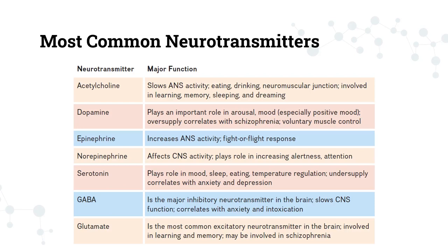Next is dopamine, which plays a very important role in arousal, mood — specifically positive mood — and voluntary muscle control. There is a hypothesis that when there is too much dopamine in our body, it may be a predictor of schizophrenia. That's why some people with schizophrenia are treated with drugs that block the activity of dopamine to reduce the amount in their body.